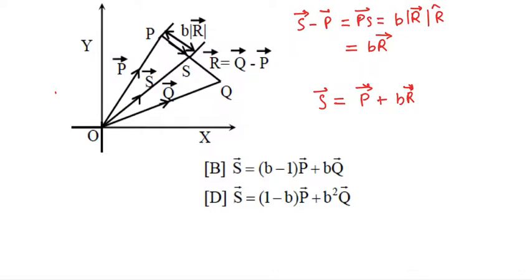This is vector R. Now vector R we can write as Q minus P. So this is P vector, then b times vector R, which is vector Q minus vector P.